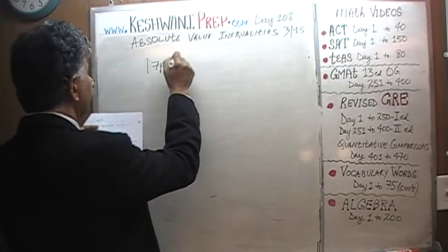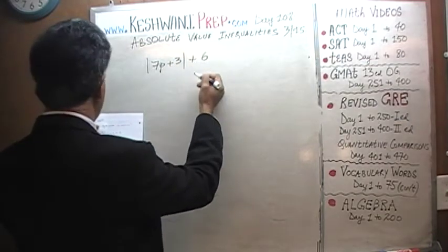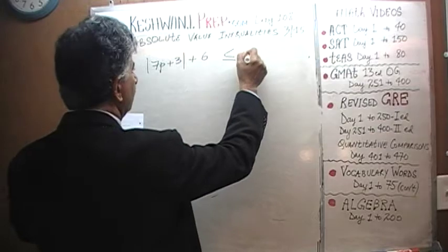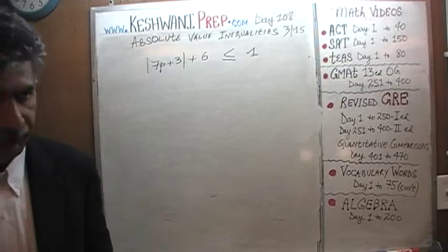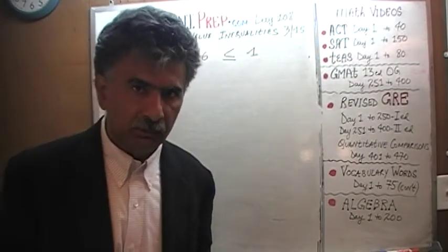Absolute value of 7P plus 3, plus 6, is less than or equal to 1. Go ahead, do it yourself and see what happens. I will give you 5 seconds to pause and unpause the video and we will do it together.